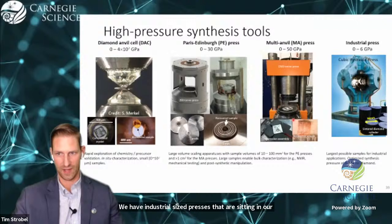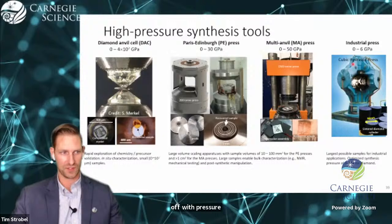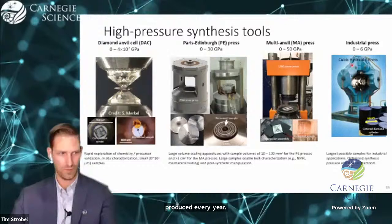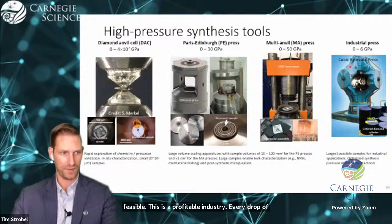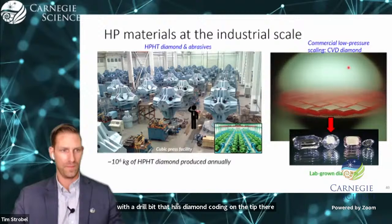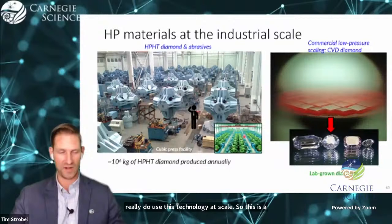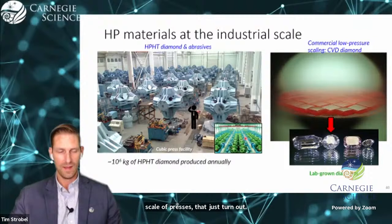The industrial diamond synthesis occurs on the scale of about 6 GPA. Under these conditions, there's about a million kilograms of diamond that are produced every year. So depending on the material, this can be industrially feasible. Every drop of oil that comes out of the Gulf of Mexico is drilled with a drill bit that has diamond coating on the tip. There are high-pressure factories that really do use this technology at scale. This is a cubic press facility that has football field scale of presses that just churn out high-pressure diamond.